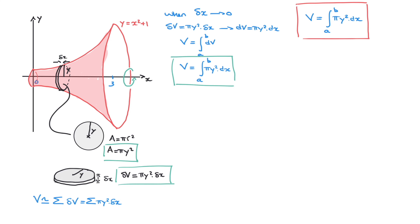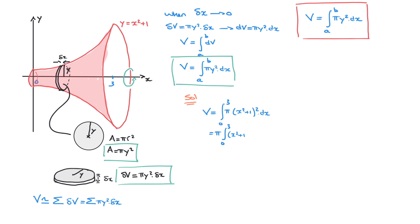Now that we have a better understanding of where this formula comes from, let's use it to calculate the volume we started with. This volume was created by revolving y = x² + 1 through 360 degrees about the x-axis between x = 0 and x = 3. Using the formula, the volume equals the integral from 0 to 3 of π · y². Since y = x² + 1, this becomes π times the integral from 0 to 3 of (x² + 1)².